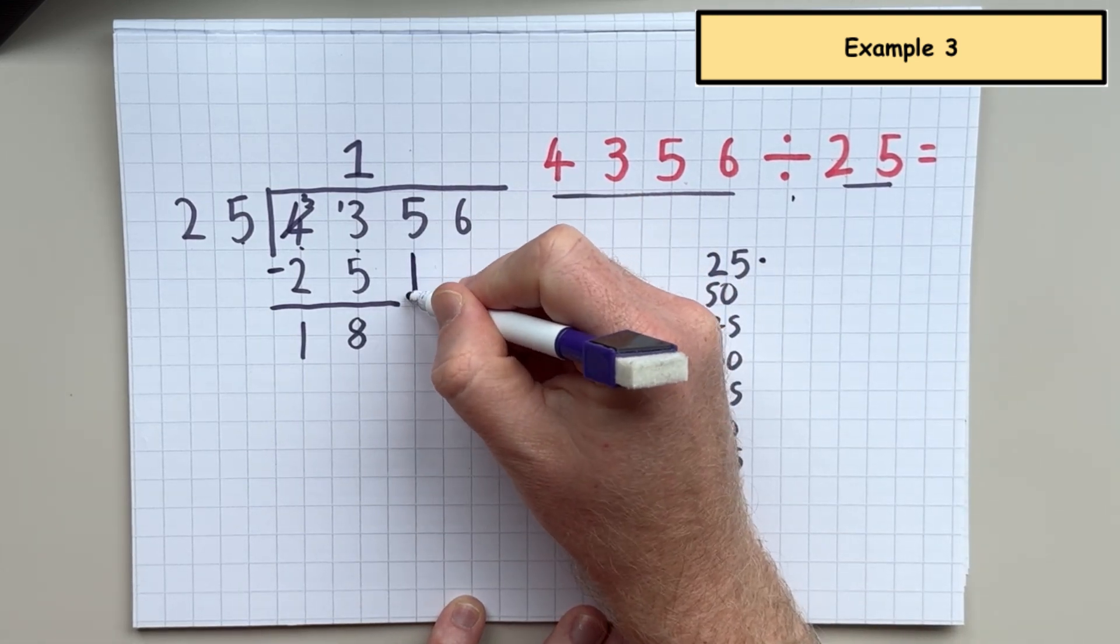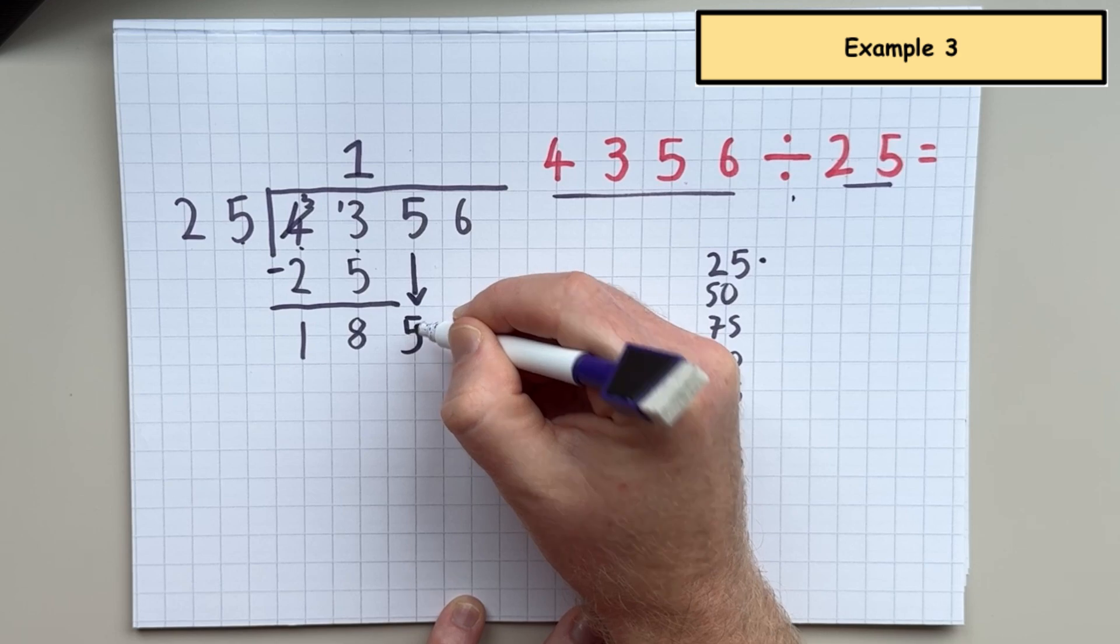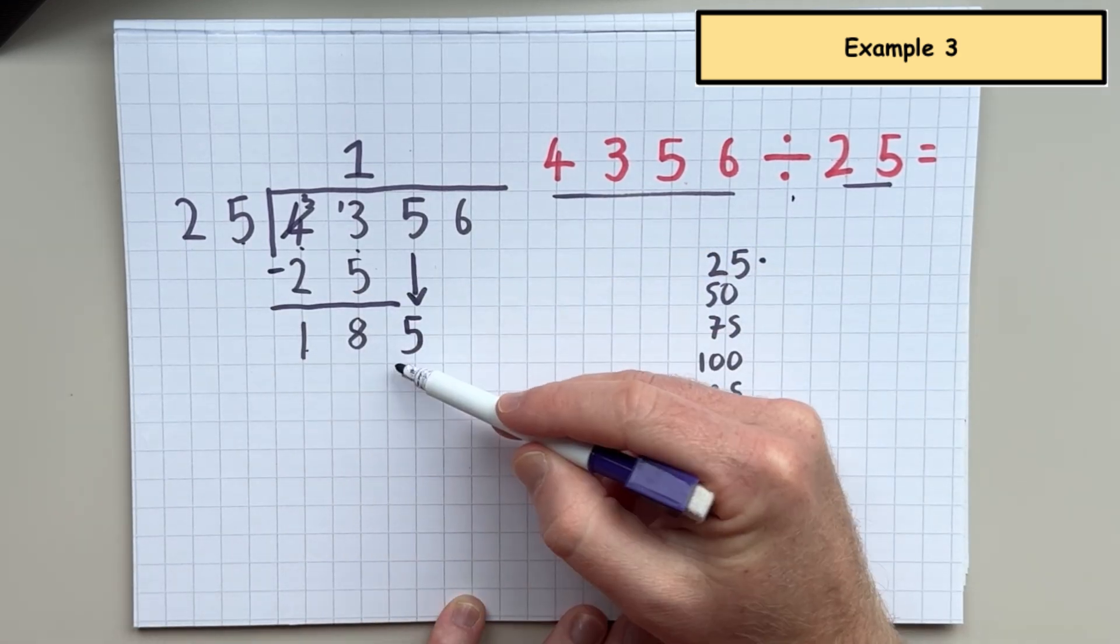And that is going to leave me with an answer of 18. And I'm going to pull down the 5 now because I have 18 there. And I'm going to add the 5 to it. So now I have 185.